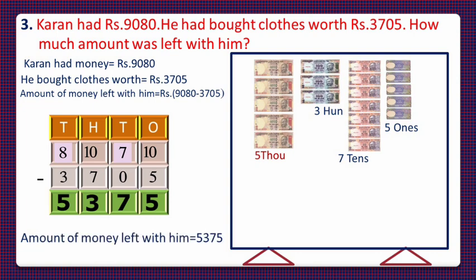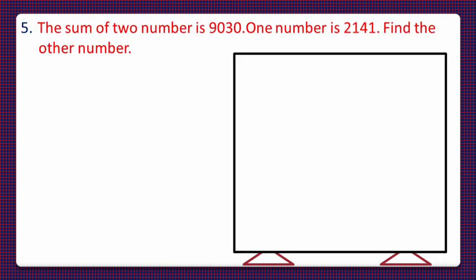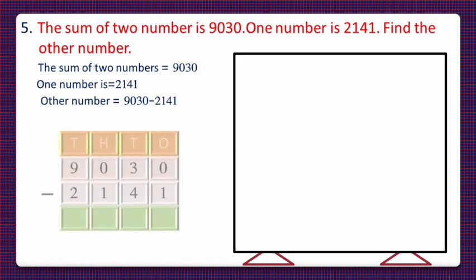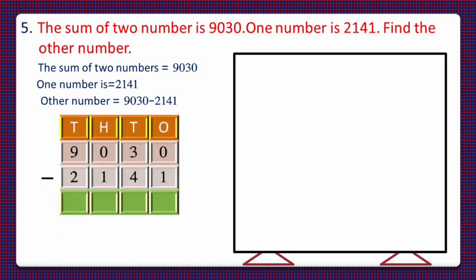Now let's move to question number 5. The sum of two numbers is 9030, one number is 2141 — find the other number. The sum of two numbers is 9030, one number is 2141, and to find the other number we have to subtract 2141 from 9030. Let's take the currency notes for 9030.